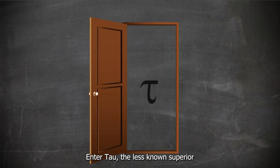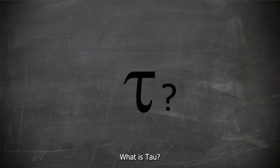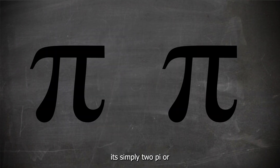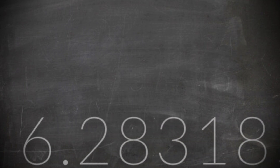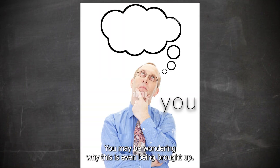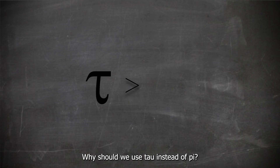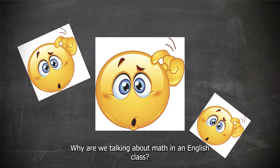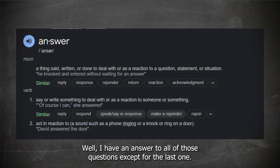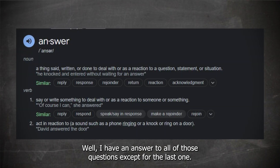Enter Tau, the less known superior in the mathematical world. What is Tau? It's simply 2 pi, or 6.2831853. You may be wondering why this is even being brought up — why should we use Tau instead of pi? And why are we talking about math in an English class? Well, I have an answer to all of those questions, except for the last one.